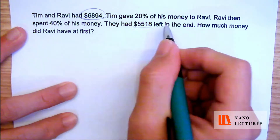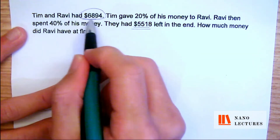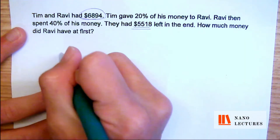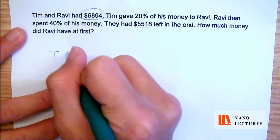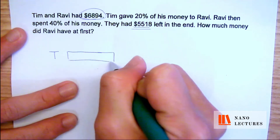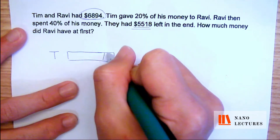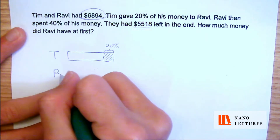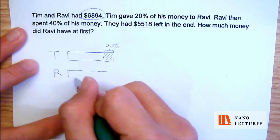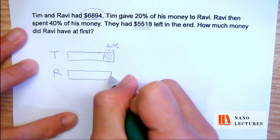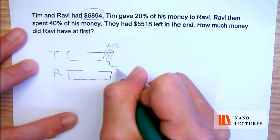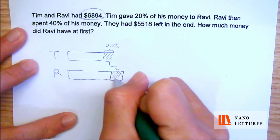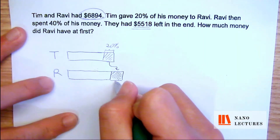I will draw a model. Because we have no idea how much they have altogether, I do not know who has more or who has less. So I'm just going to put Tim — draw a model over here — and put this as the 20% that he gave to Ravi. For Ravi, I do not know how much, maybe more, maybe less, but I'm going to put this as the 20% that was given.